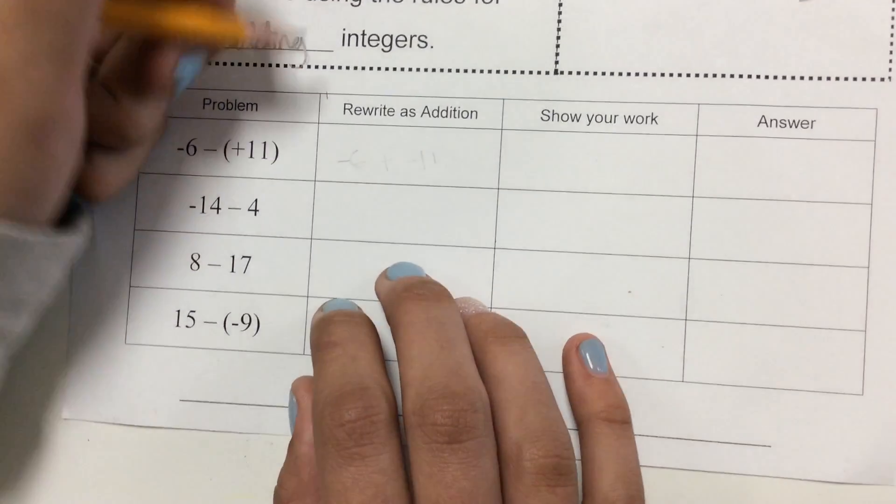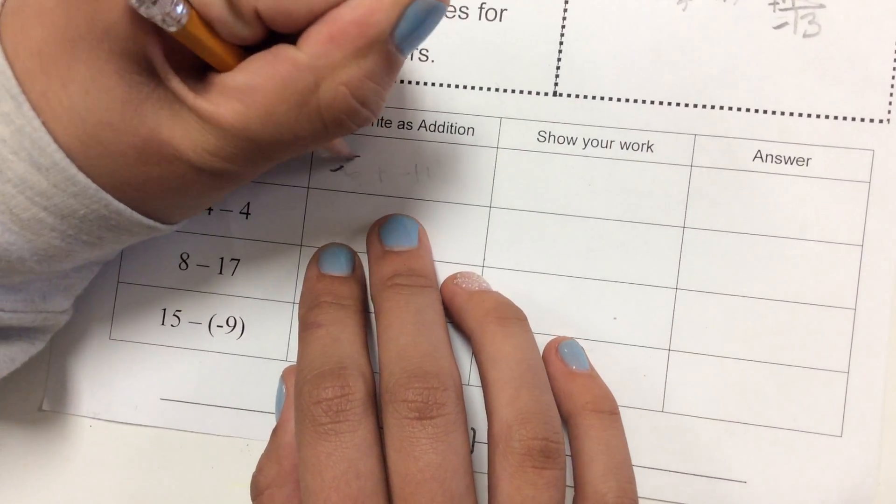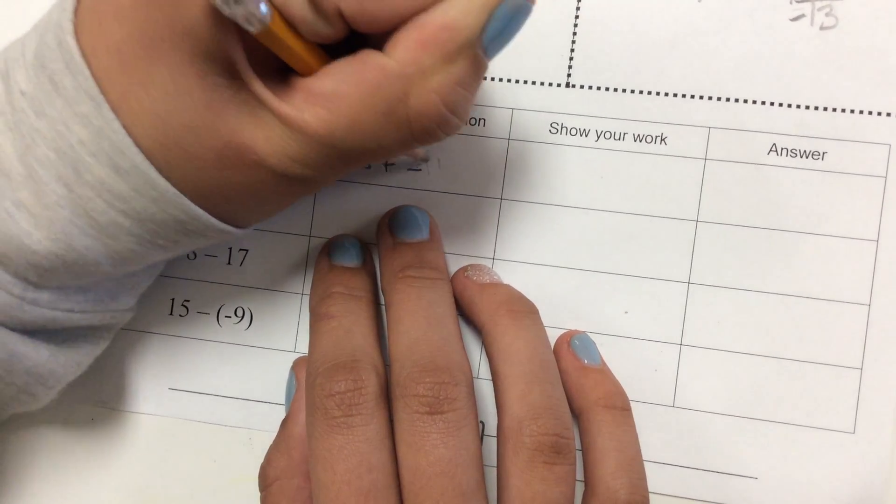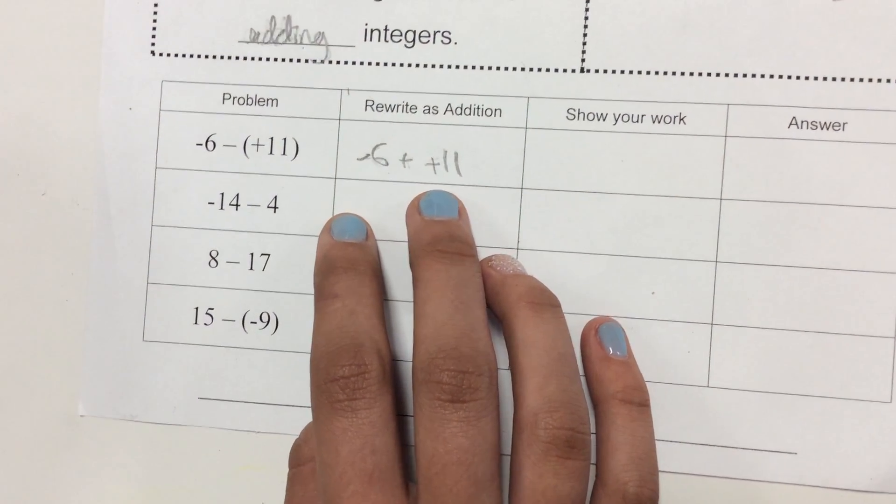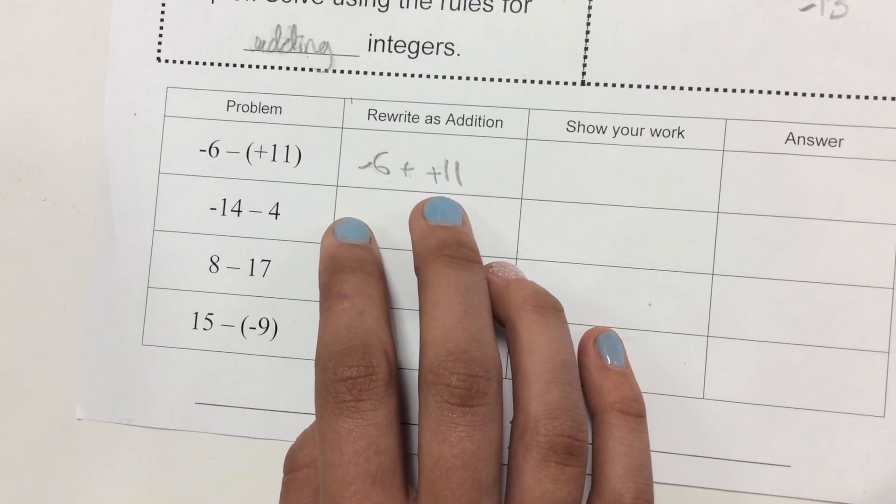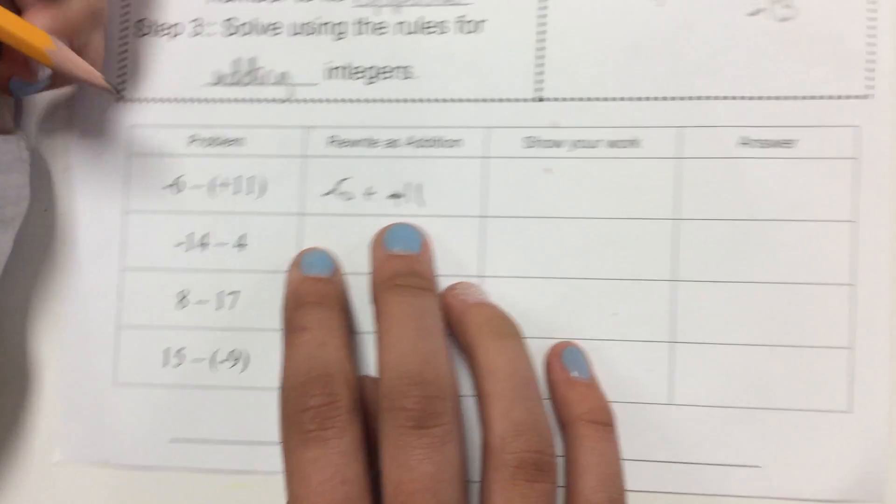So, down here, you have to change it. So, it would be negative six plus negative eleven. That's negative, because they have to be the same.